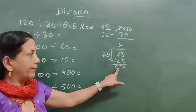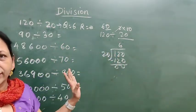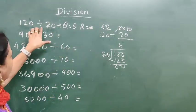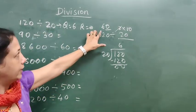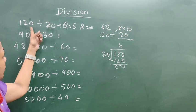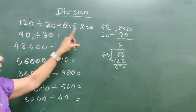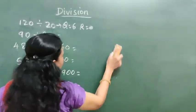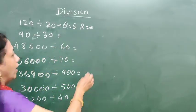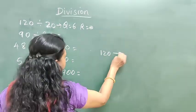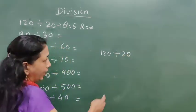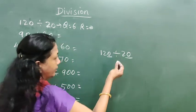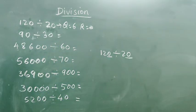Is it clear? I have shown 2 methods. First, divide with the 2, then count how many 0s are there. Now another method: 120 divided by 20 — here there is one 0 in 120 and one 0 in 20.